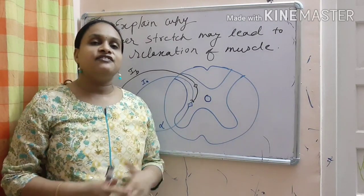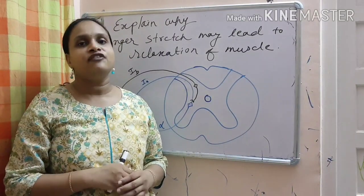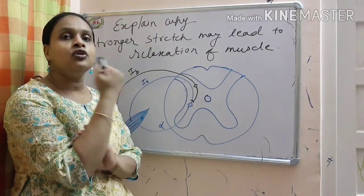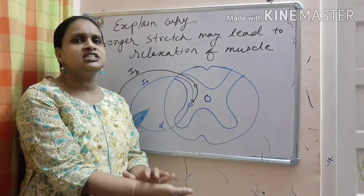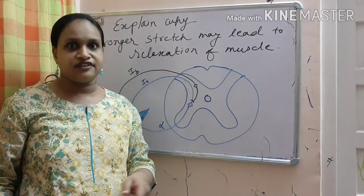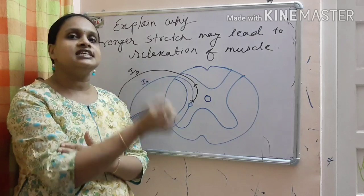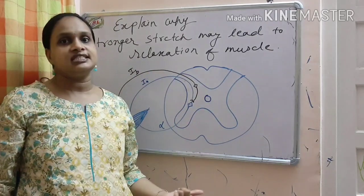And this reflex is also responsible for the clasp knife. When we try to close the arm, initially, a much resistance is felt because of stretch reflex. And finally, the limb closes with a sudden jerk because of inverse stretch reflex.